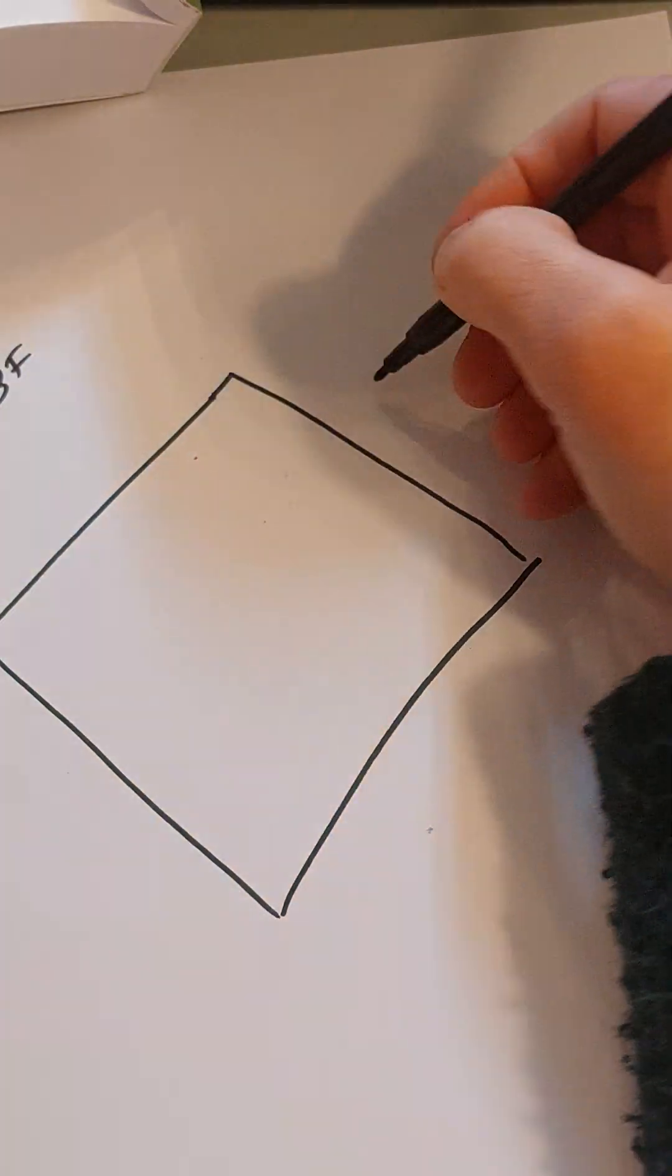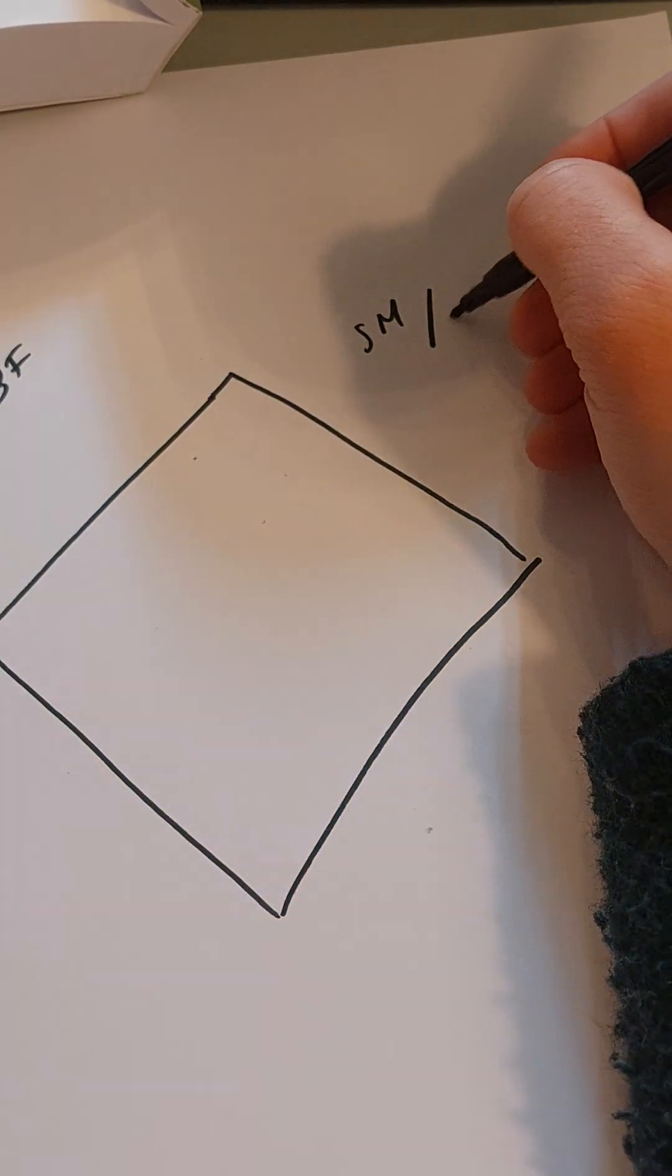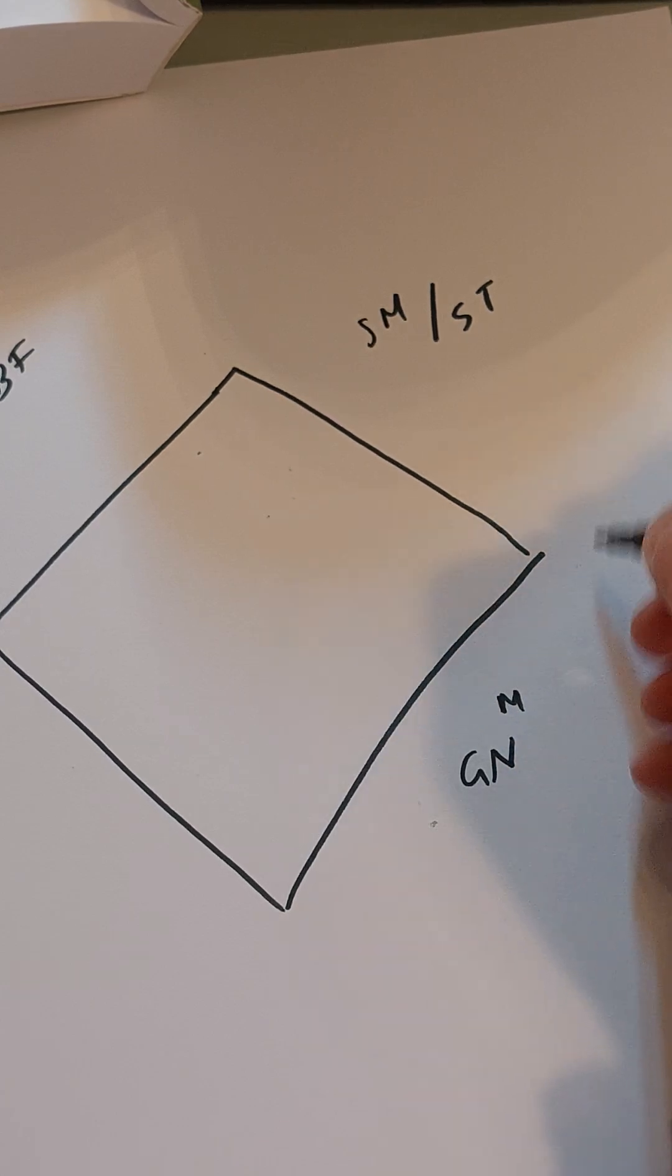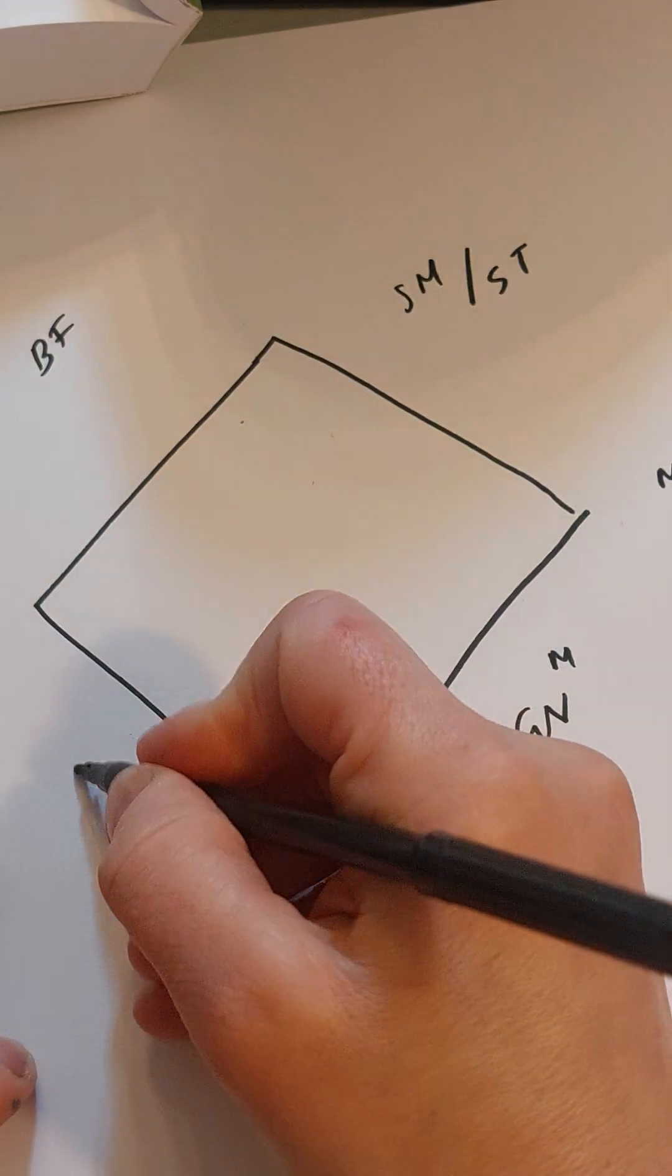The borders you have the muscles: you have biceps femoris, semimembranosus, semitendinosus, and then at the bottom you have gastrocnemius, the medial head and the lateral head.